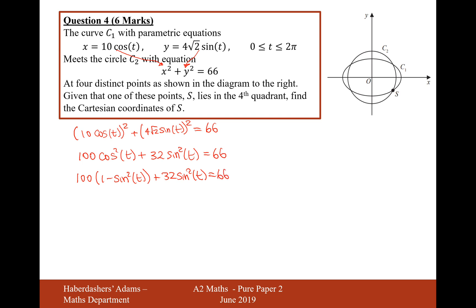So the next thing to do will be to expand the brackets, so it's going to be 100 minus 100 sine squared t plus 32 sine squared t equals 66.